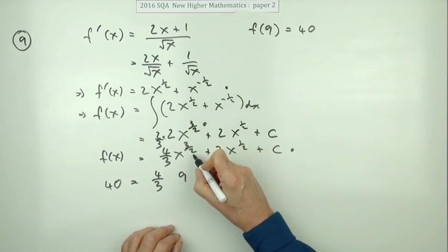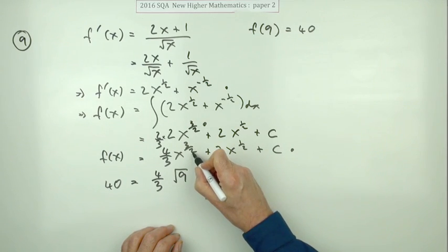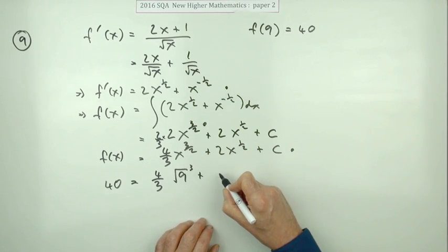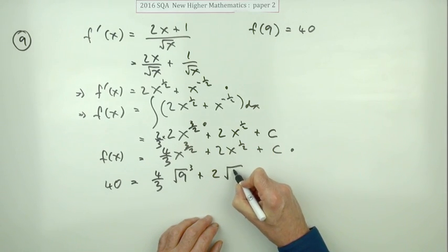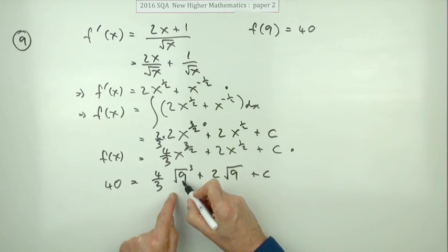Power three upon two - or I could write out what it means: the three is power three and the two underneath is the square root, so it's the square root of nine cubed, plus two times and that's just the square root of nine plus C. There's only one mark for this answer for doing all this arithmetic. So this would be square root of nine is three.